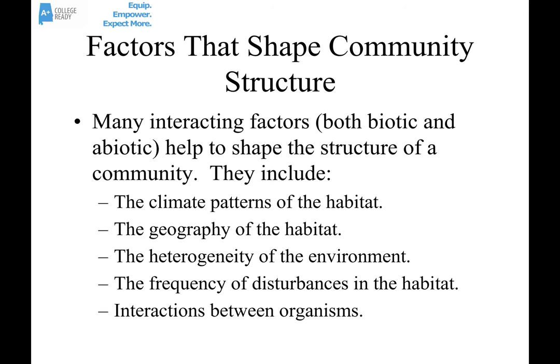Some factors that shape the structure of a community can be biotic or abiotic — living or non-living. These include things like climate patterns, geography such as whether it's mountainous, the heterogeneity of the environment — whether it's uniform or has clumps of different things — the frequency of disturbances like fires, floods, or earthquakes, and the interactions between organisms such as competition, predation, and symbiosis.